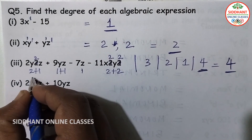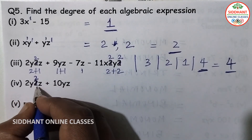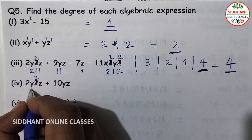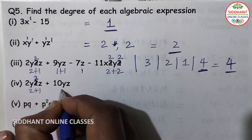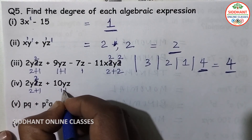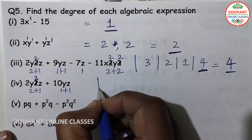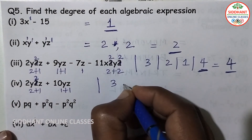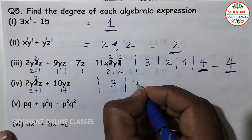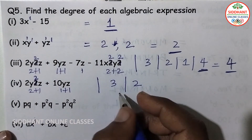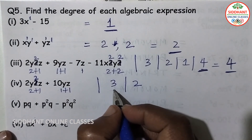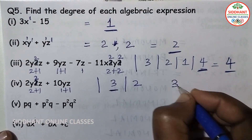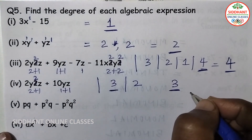For the fourth expression with y square, 2y square z, and 10yz: degrees are 2, then 2 plus 1 equals 3, and 1 plus 1 equals 2. The highest degree is 3, so the degree of that algebraic expression is 3.